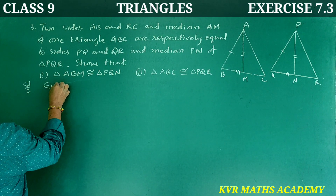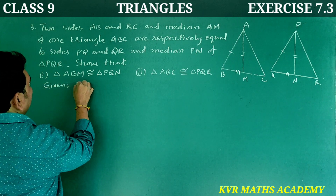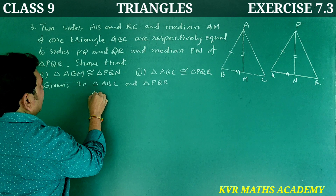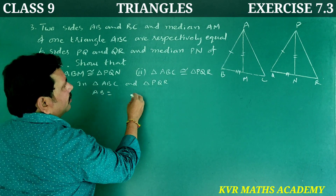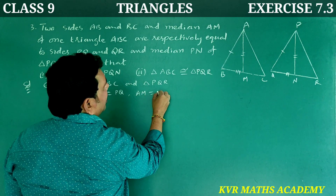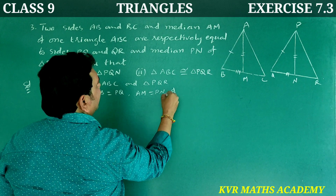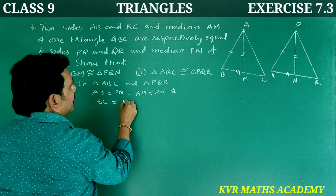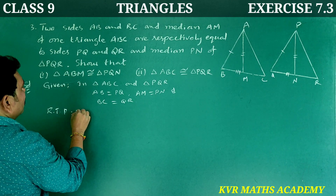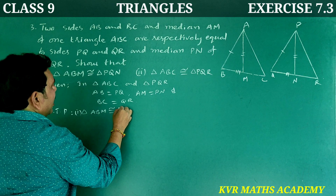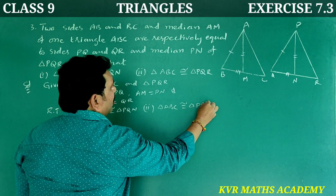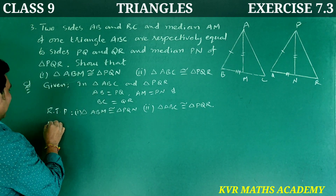Solution. Given: in triangle ABC and triangle PQR — AB is equal to PQ, AM is equal to PN, and BC is equal to QR. To prove: first, triangle ABM is congruent to triangle PQN; second, triangle ABC is congruent to triangle PQR.